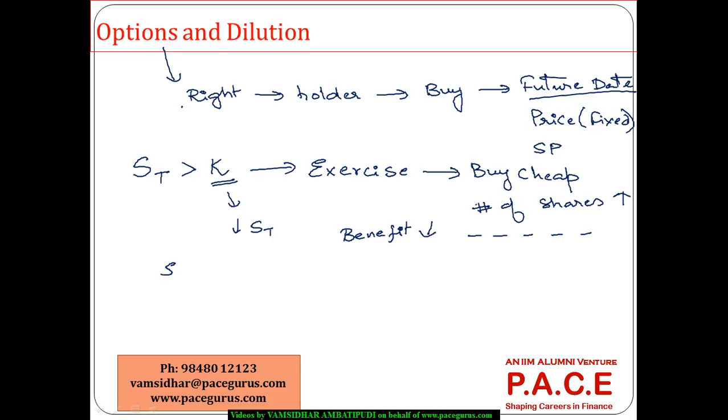Even if the stock price is less than K, obviously none of the holders are going to exercise. They're going to let the options expire, which means they're not going to buy any new shares. So the status quo will remain.